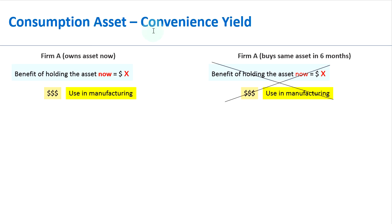We are going to have a quick look at what we mean by convenience yields when we talk about consumption assets. When we say a particular commodity is a consumption asset, what we are saying is that this commodity can be used in the manufacturing process, which provides value.